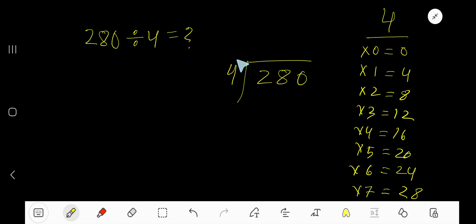280 divided by 4. Here 4 is a divisor, so we need the multiplication table of 4. 4 times 0 is 0, 4 times 1 is 4, 4 times 2 is 8, 4 times 3 is 12, 4 times 4 is 16, 4 times 5 is 20.